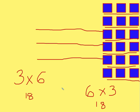What I've just shown you is the commutative property. The commutative property, or the turnaround property, tells you that it doesn't matter if you make 3 groups of 6 or 6 groups of 3, your answer is still going to be the same.